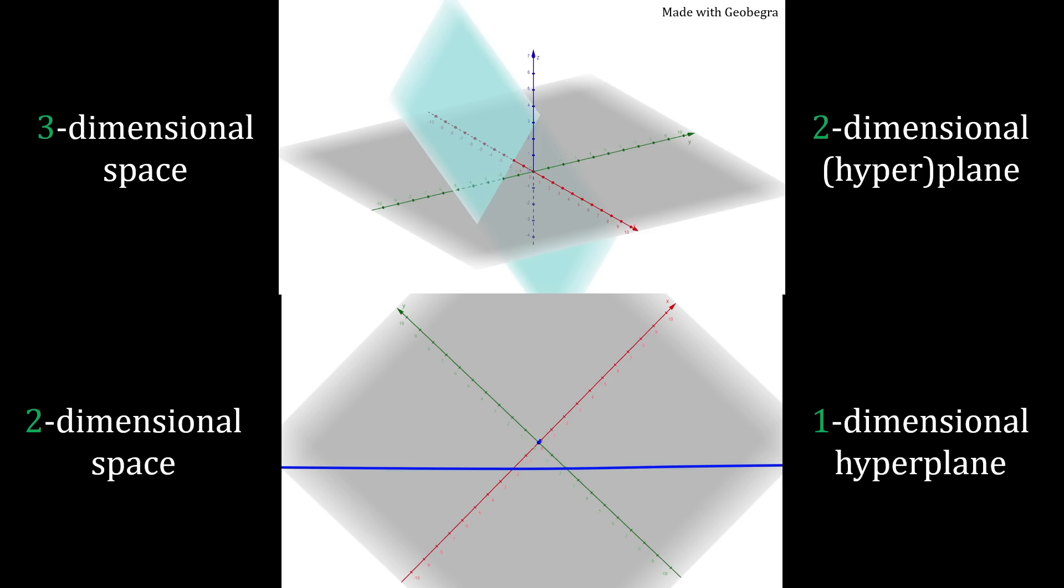But looking at these images, notice that the intersection of the two-dimensional plane with the xy-plane in the three-dimensional space forms a one-dimensional hyperplane, also called a line, in the two-dimensional space, of course. This idea of intersection is very important to the approach this video teaches.